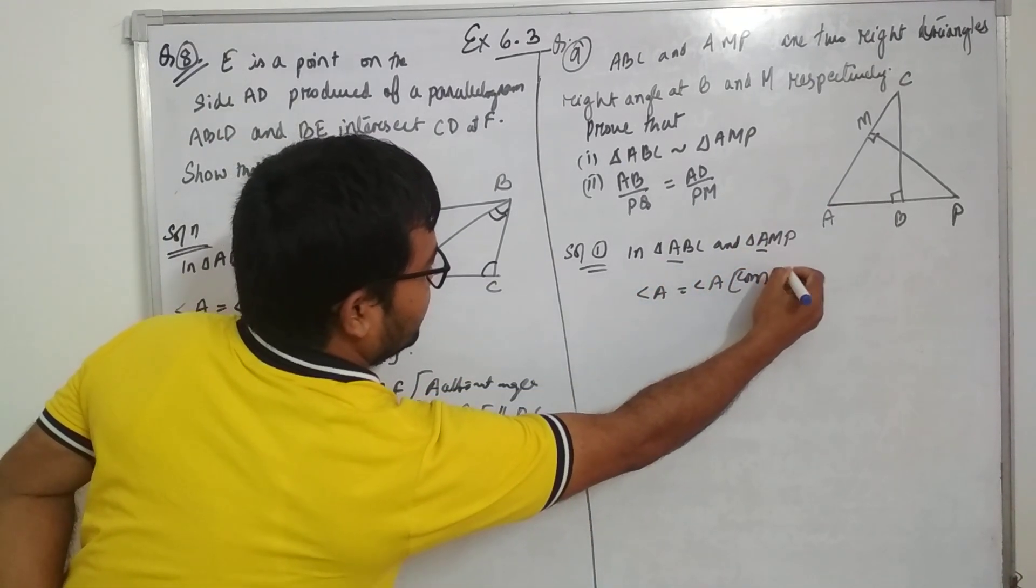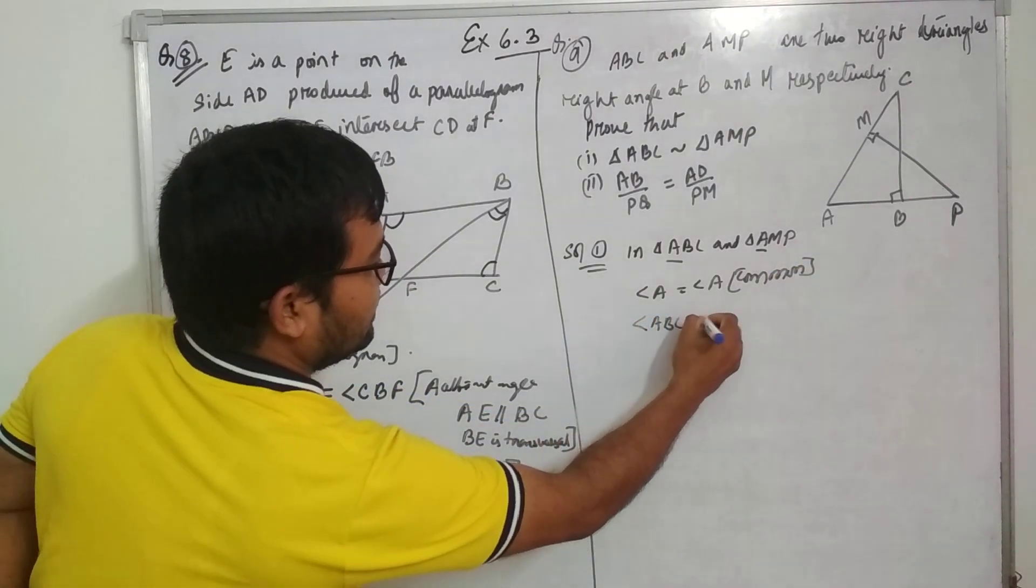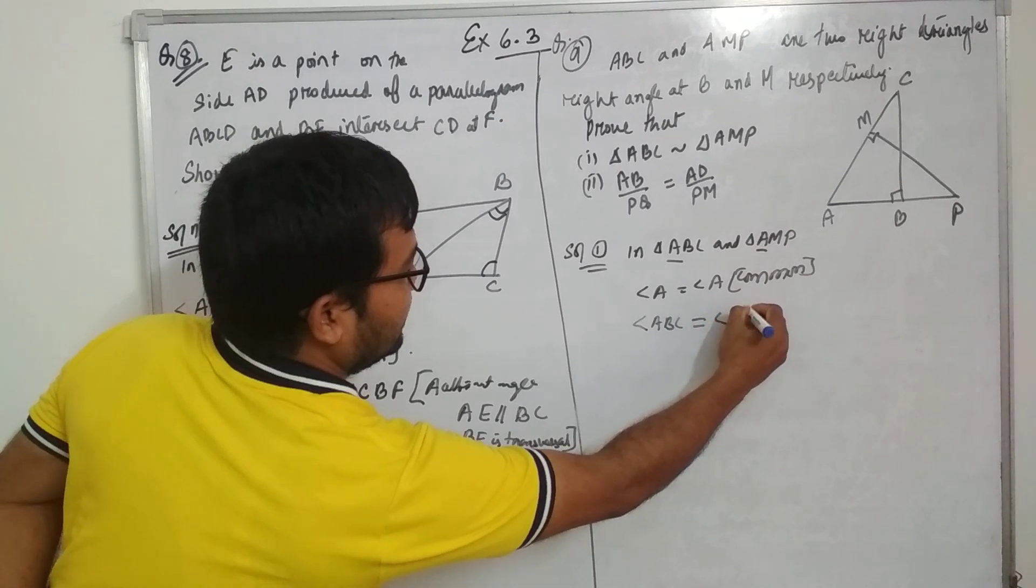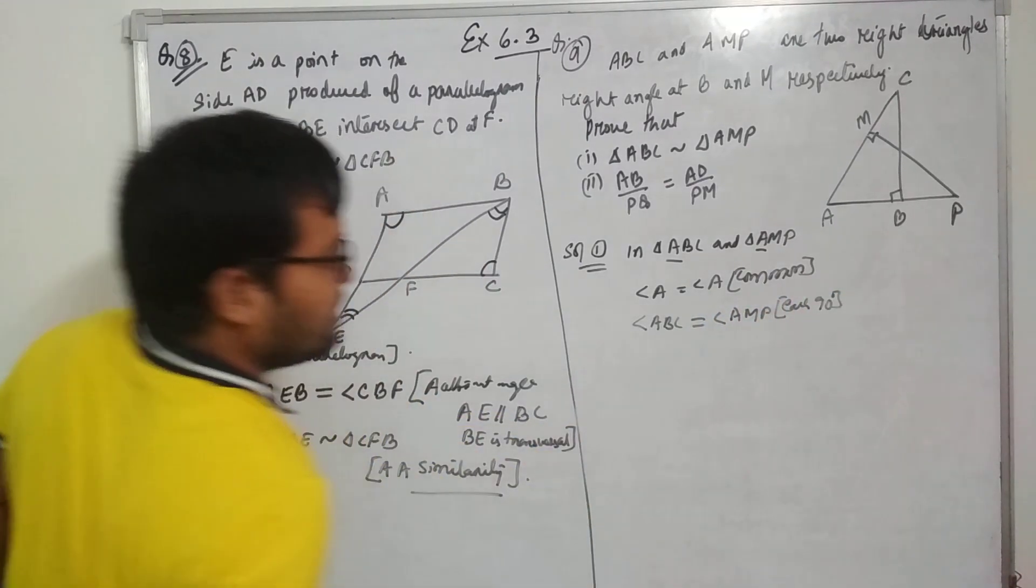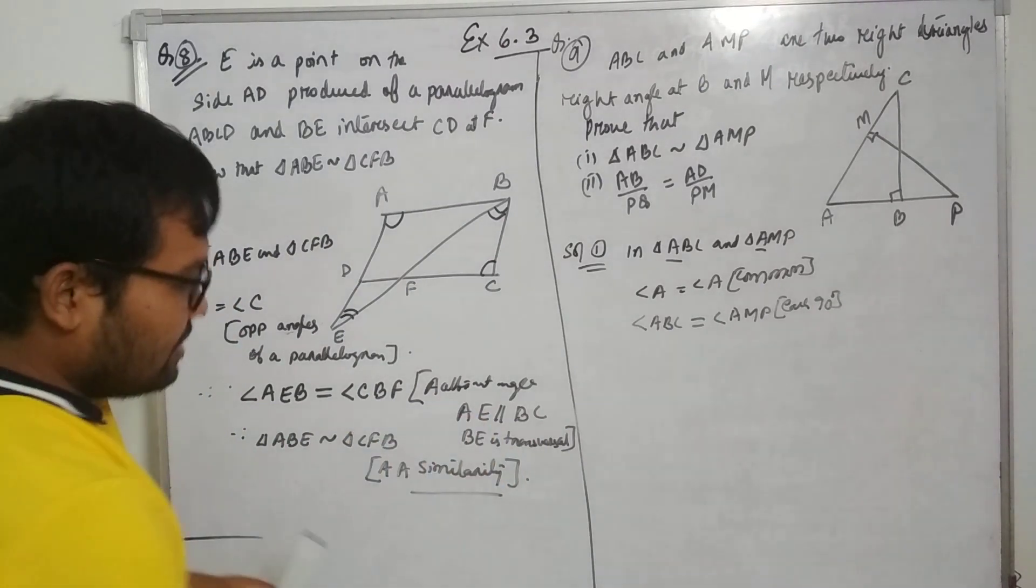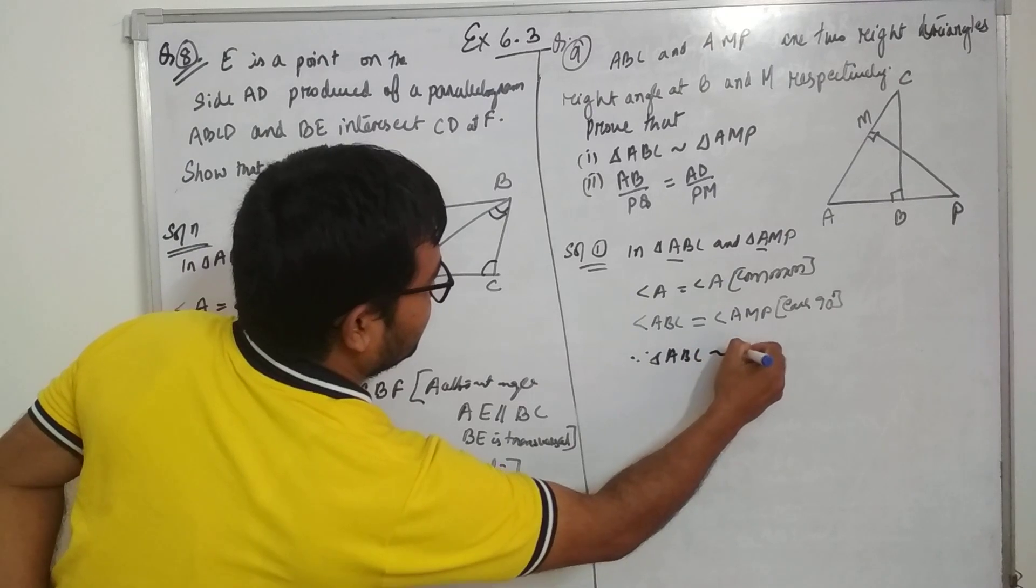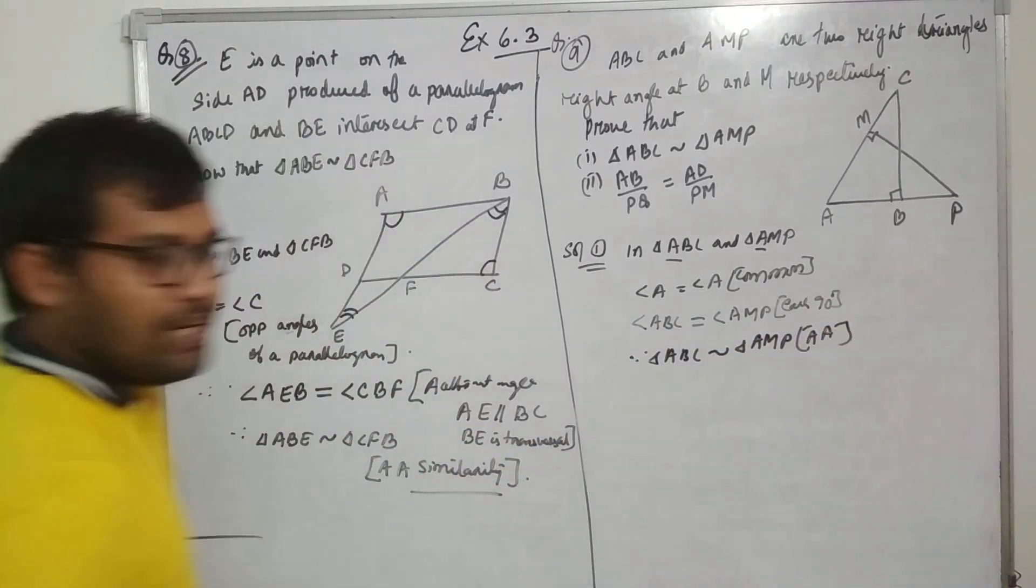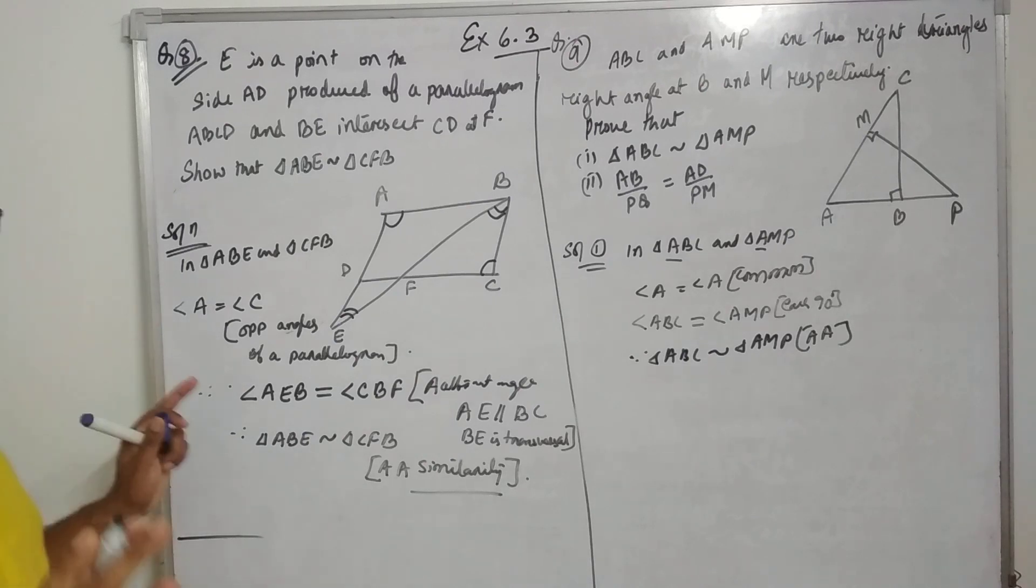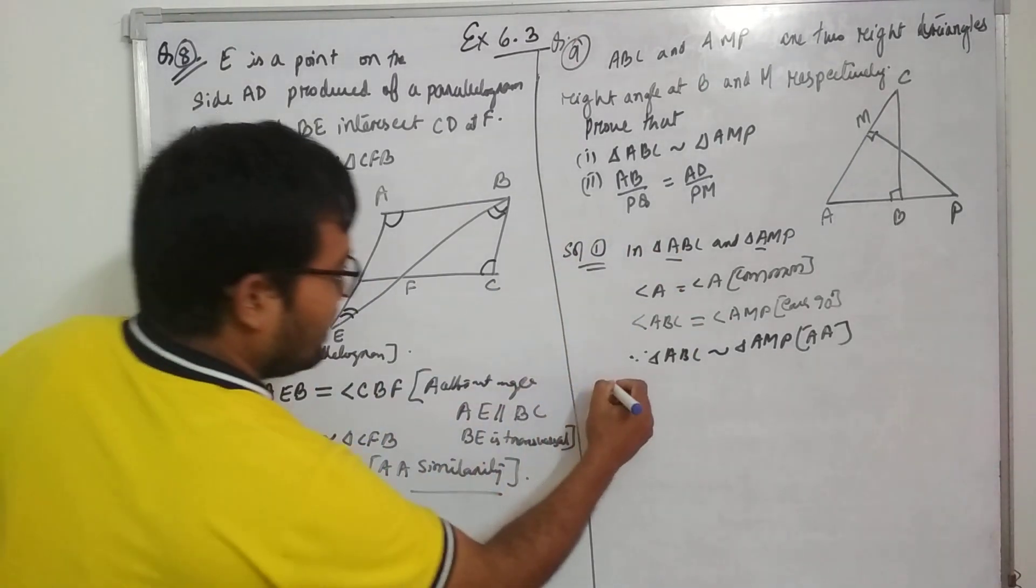90 degree, 90 degree is given. Angle ABC equal to angle AMP is 90 degree. That's it, we got it. Angle-angle similarity criteria. Very basic questions, I hope you have understood roman number 1. Now roman number 2.